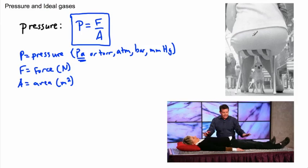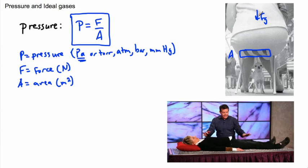There's a picture of a lady with a dog — the dog doesn't look very happy. That's because there's a lot of pressure: a large force due to gravity going downwards, and not a very big area — that's the small area of a stiletto heel. A large force divided by a small area equals a big pressure.